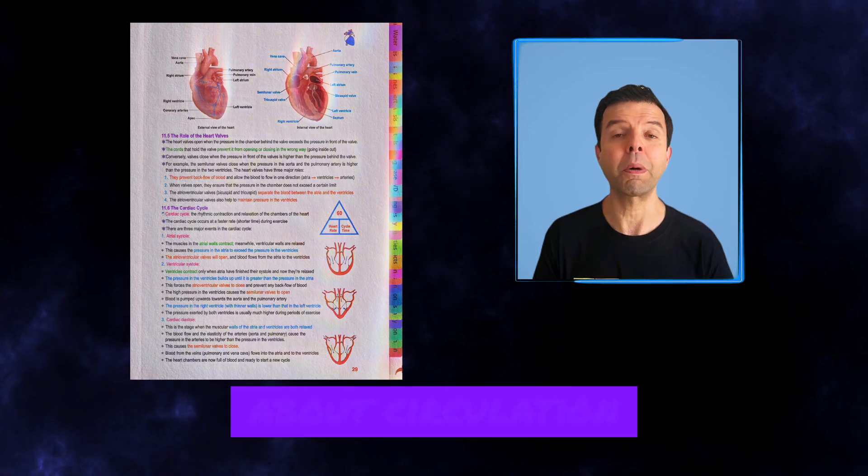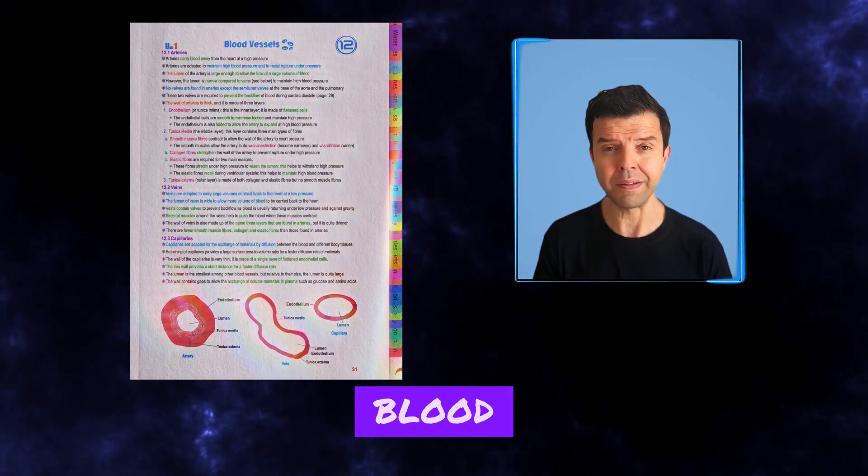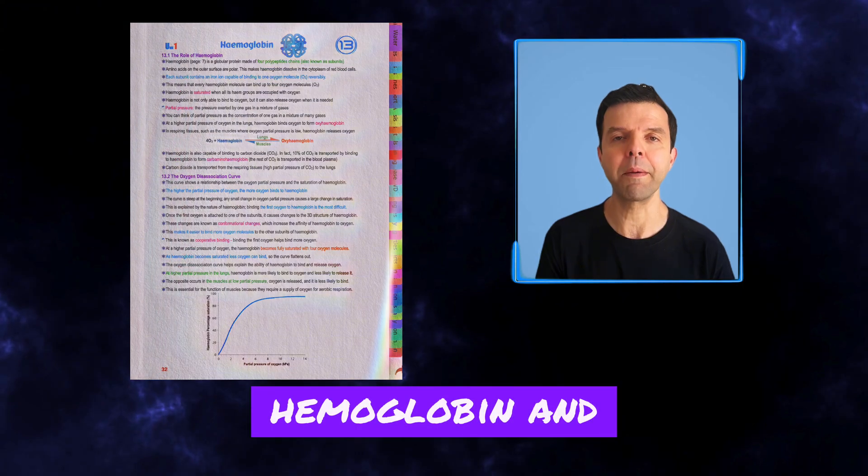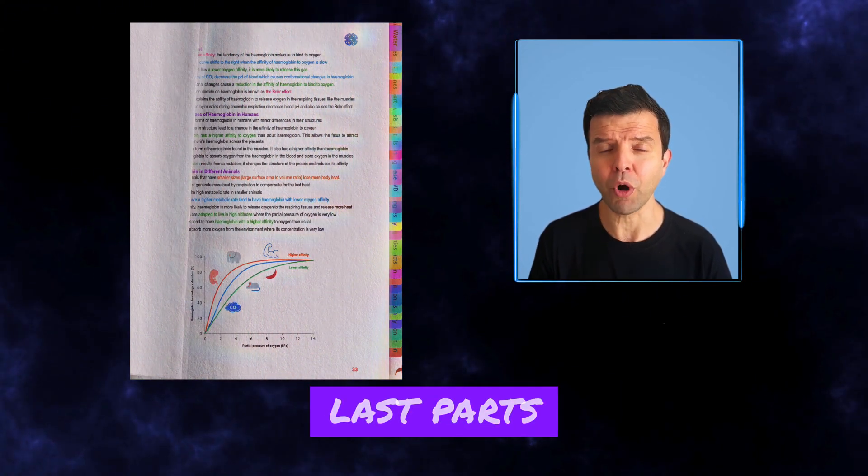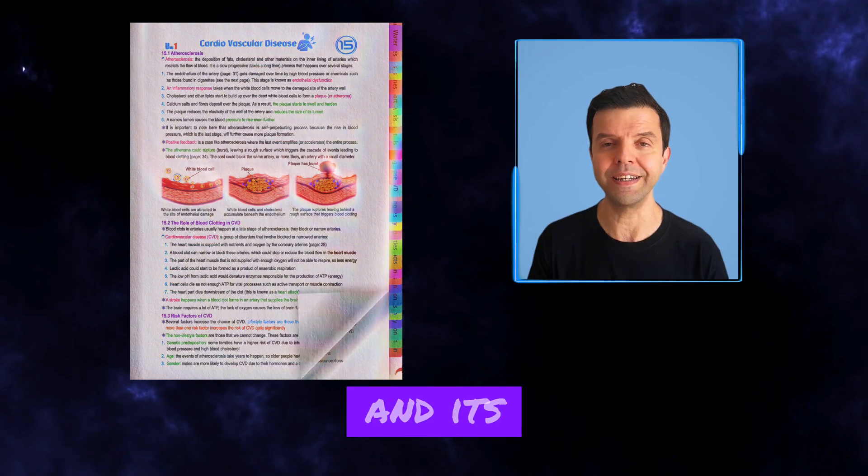The third and last block talks about circulation, including the structure of the heart, blood, mainly about hemoglobin and blood clotting. And the last part is called cardiovascular disease, which is heart disease and its treatment.